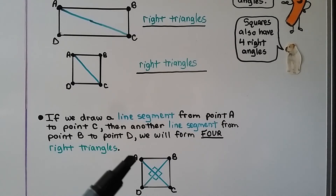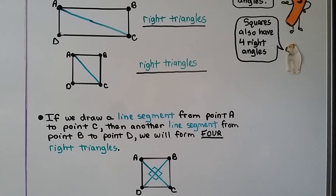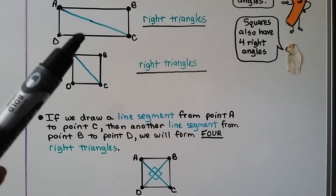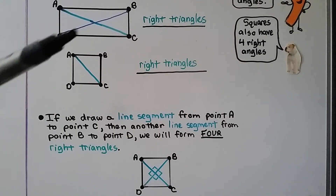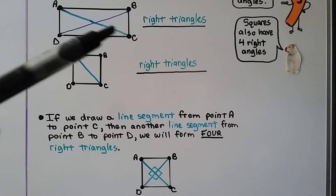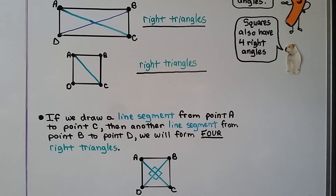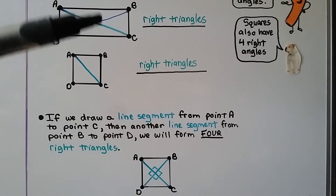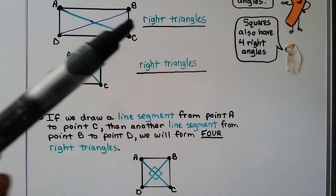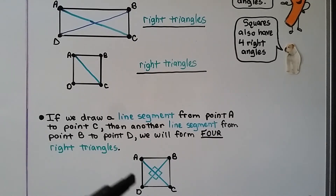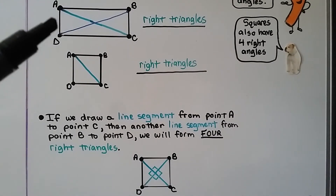If we draw a line segment from point A to point C in this square and then another line segment from point B to point D, we will form four right triangles. The center angles are right angles, so we make four right triangles. That happens with a square because all four sides are the same length. If we did the same thing to a rectangle, we would create two obtuse angles and two acute angles at the center, giving us two obtuse triangles. That happens because in a rectangle only two pairs of sides are the same length — it won't make four right triangles like a square, which has all four sides equal.